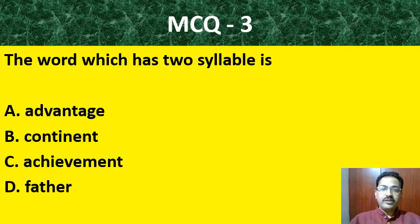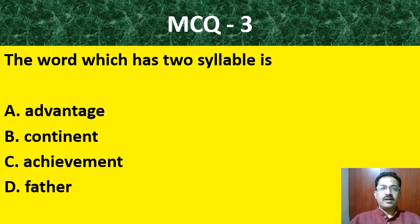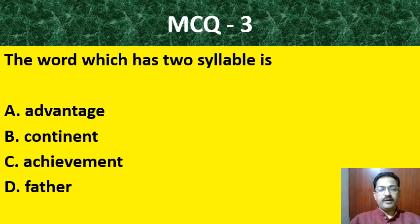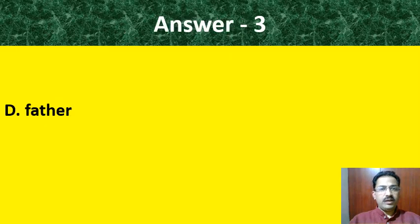MCQ question number 3: The word which has two syllables is — for, advantage, continent, achievement, or father. Among the four options, the word with two syllables is father.